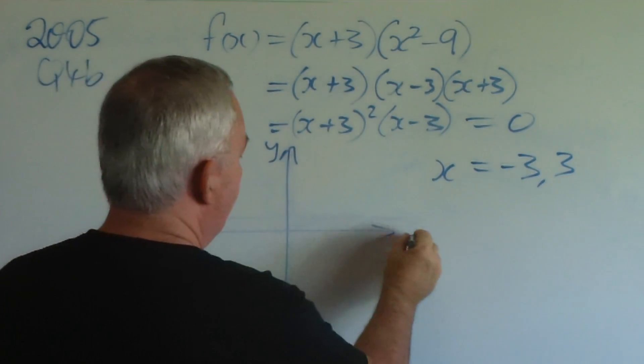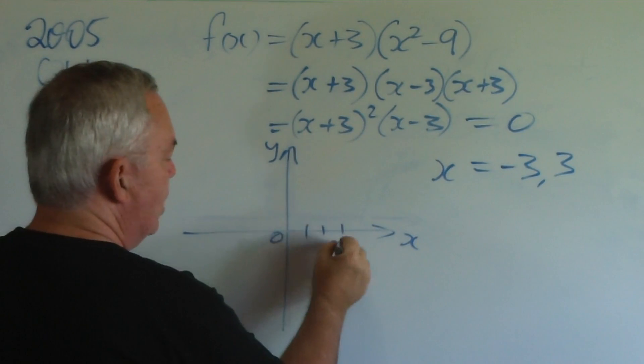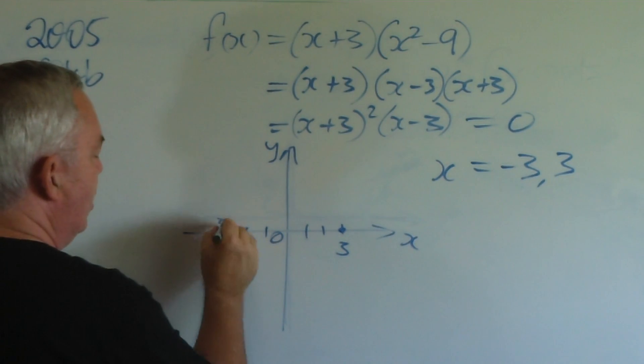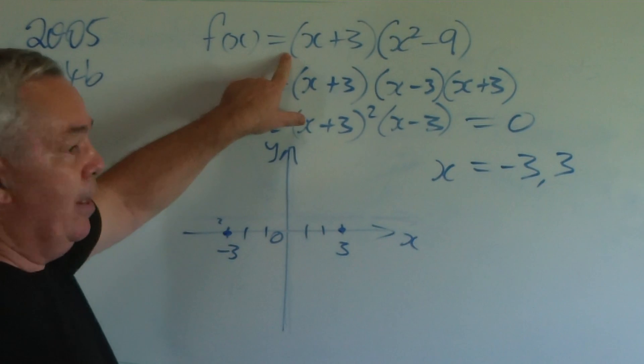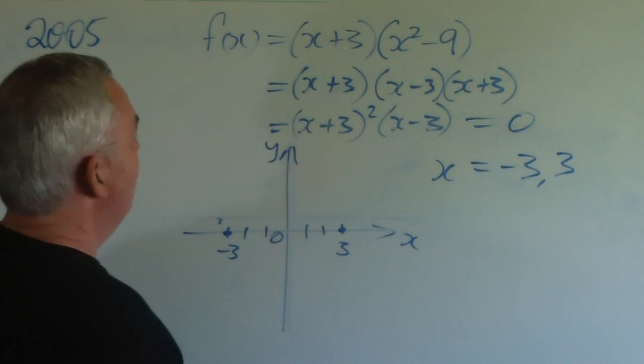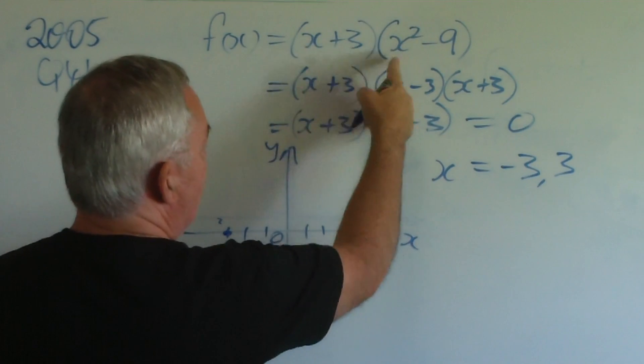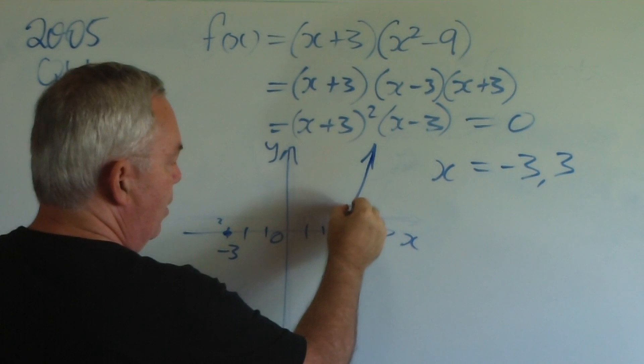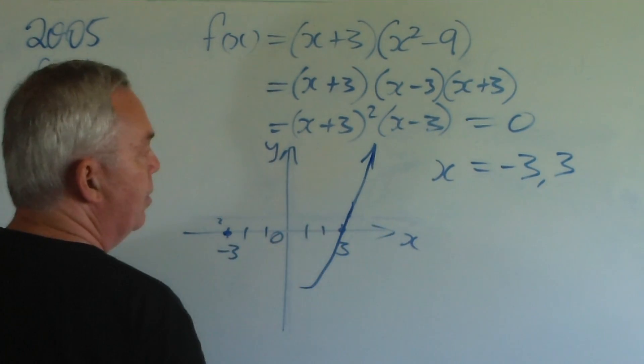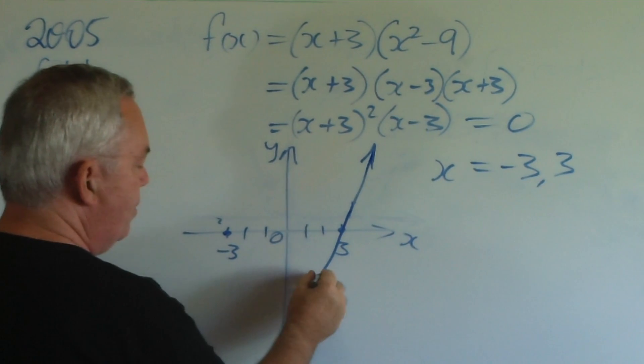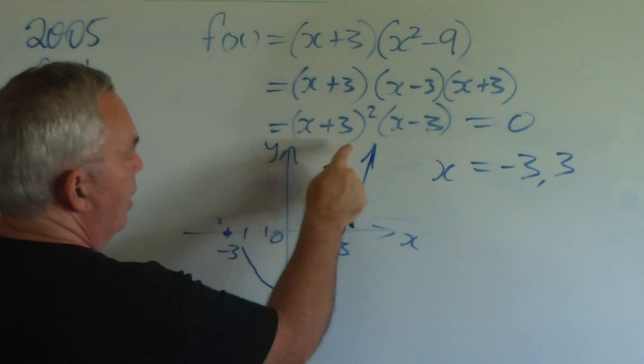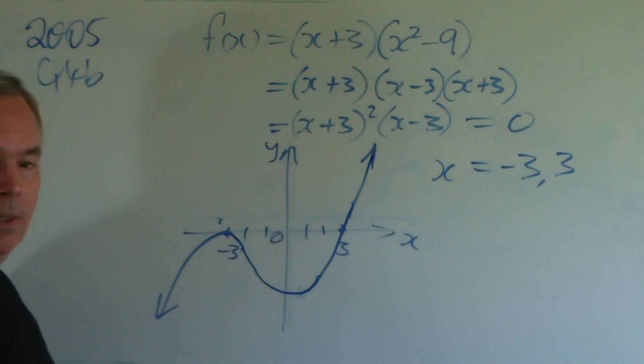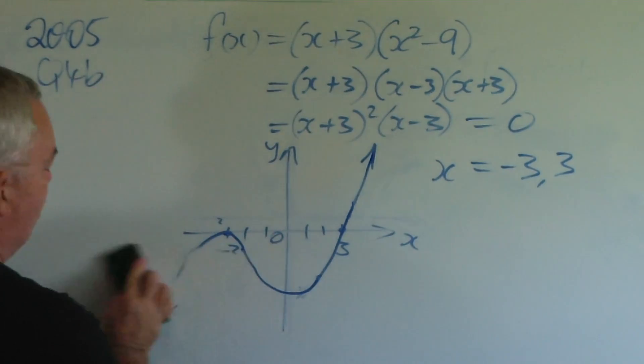Draw our axes. Plus three is going to be a normal root. Minus three is going to be a double, so I'll put a little two to remind me. Again, positive leading coefficient, because it's a plus x³, so it is heading upwards as x increases. The curve passes directly through the root at three. And as it comes up to this root, it's going to behave like a parabola and bounce. And there it is for the 2005 HSC paper.